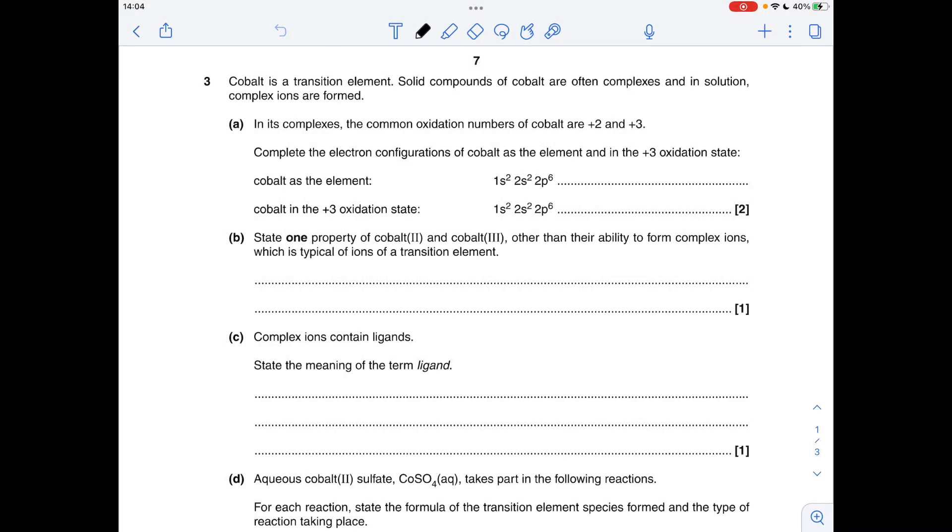Okay, so part A we've got to give the electron configurations of cobalt as the element and in the plus three oxidation state. So we're picking up at 3s, so it's 3s² 3p⁶, I'm going to leave some space and write 4s here, so 4s² 3d⁷. Now if you remember from the first video, they can be in either order.